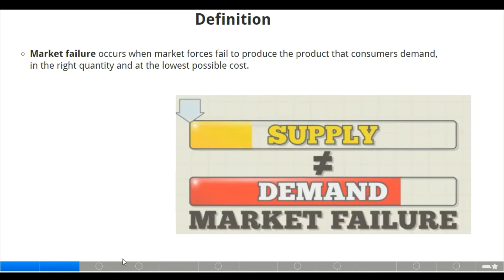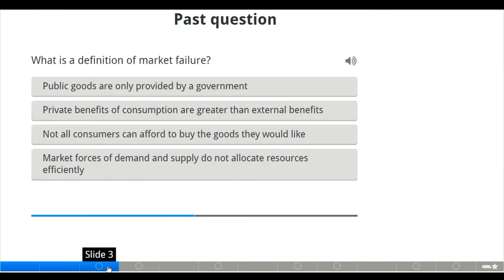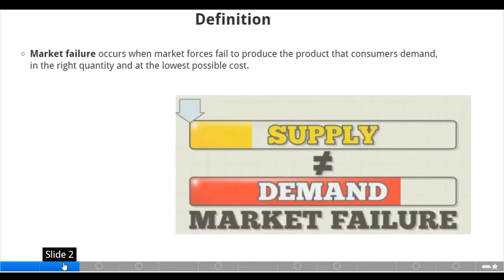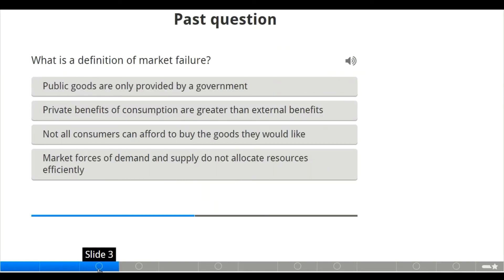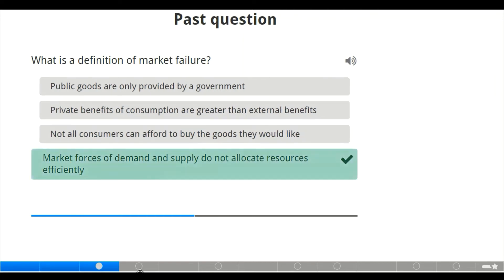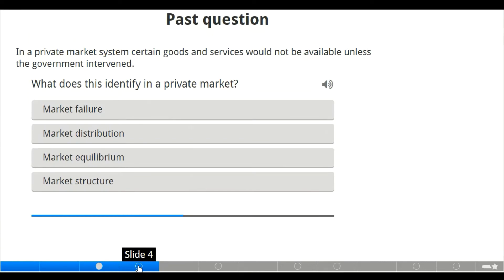Moving to the next slide, we have an activity. What is the derivation of market failure? According to our definition, it occurs when market forces fail to produce the products that consumers demand in the right quantity. Let us check the options: public goods are only provided by government — no; private benefit of consumption are greater than external benefits — no; not all consumers can afford to buy the goods they would like — no. The correct answer is: market forces of demand and supply do not allocate resources efficiently.